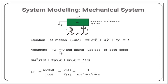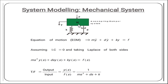Assuming initial conditions to be zero and taking the Laplace transform of both sides, the equation m·ÿ + d·ẏ + ky = F is converted to: ms²Y(s) + dsY(s) + kY(s) = F(s). The output is displacement Y(s) and input is force F(s). Therefore, the transfer function Y(s)/F(s) = 1/(ms² + ds + k). This is the transfer function obtained for the mechanical system.